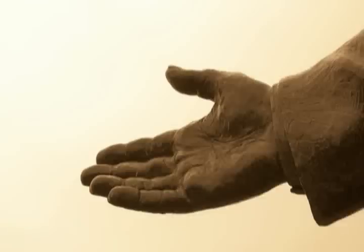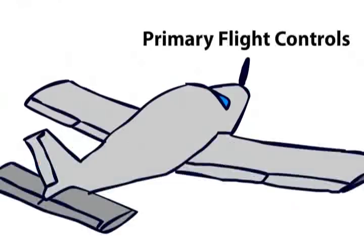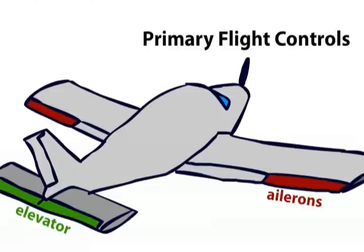An aircraft primarily controls itself using its primary flight controls. These are the ailerons on the wings, the elevator on the horizontal stabilizer, and the rudder on the vertical stabilizer.